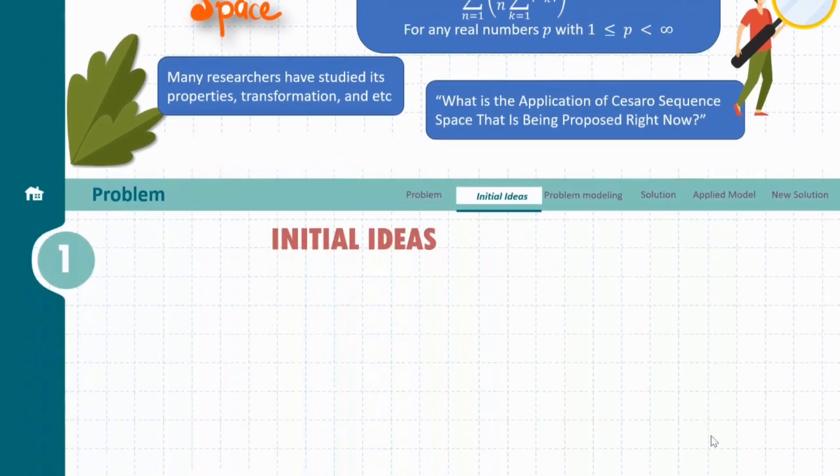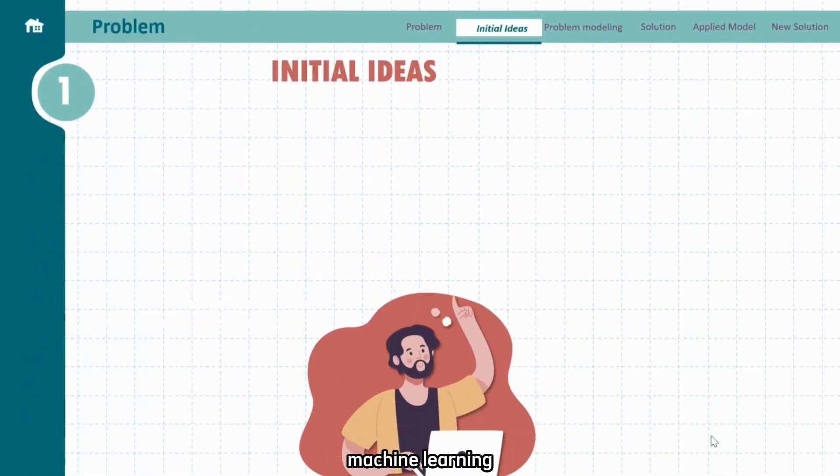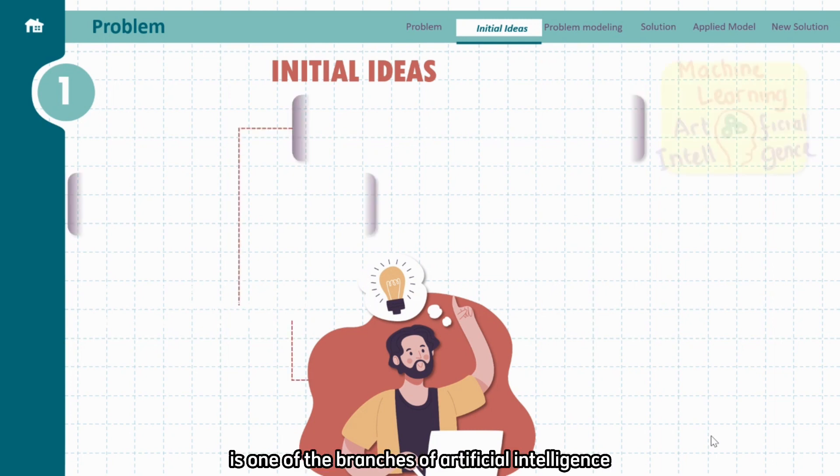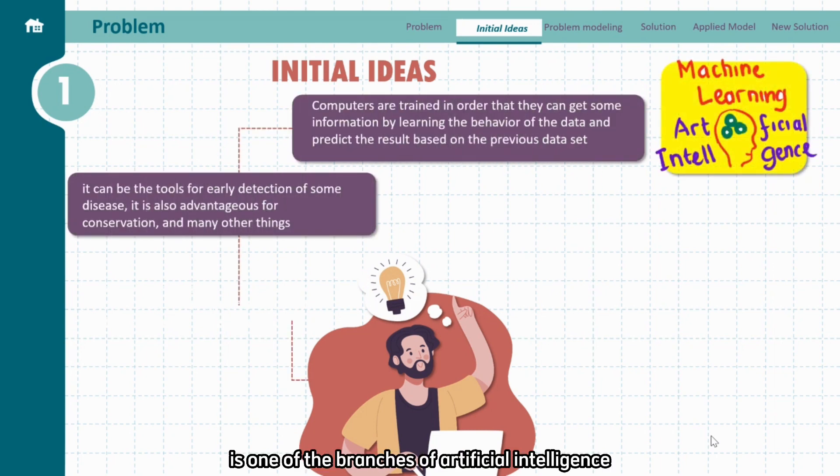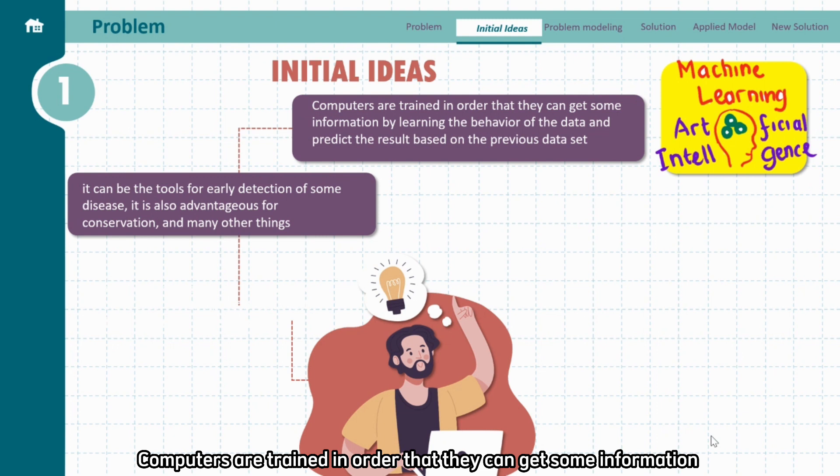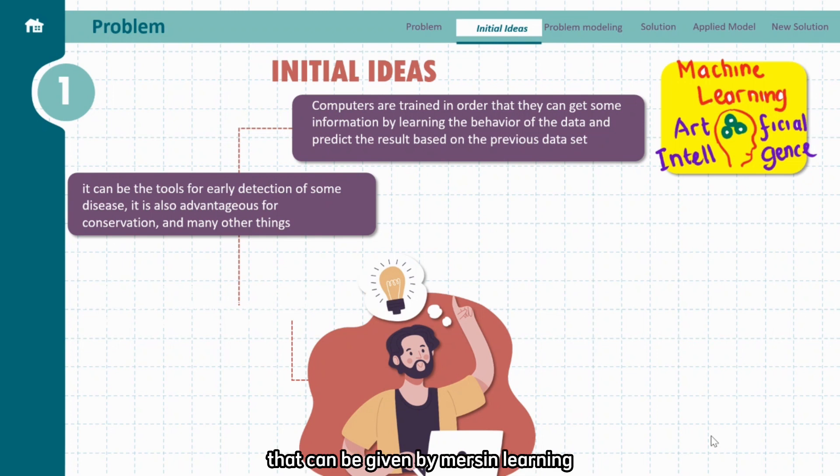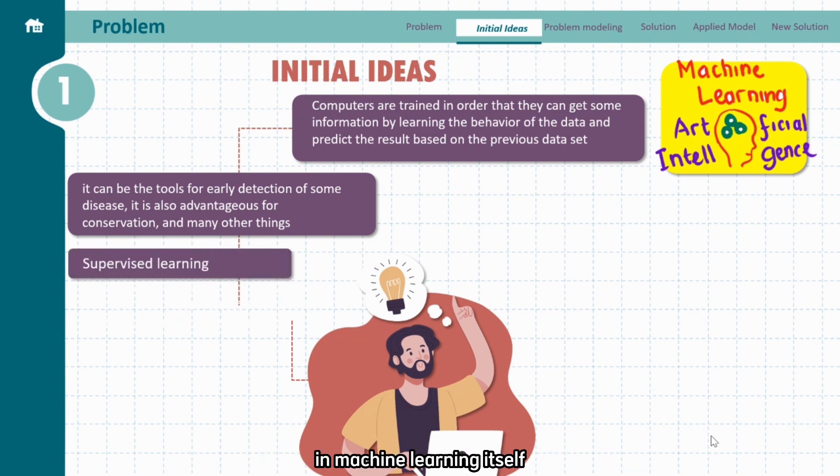Well, in this particular video I will share some ideas regarding the application of Cesaro sequence space in machine learning. Machine learning is one of the branches of artificial intelligence. Computers are trained in order that they can get some information by learning the behavior of the data and predict the result based on the previous dataset. There are so many benefits that can be given by machine learning, one of which is it can be the tools for early detection of some disease. It's also advantageous for conservation and many other things.